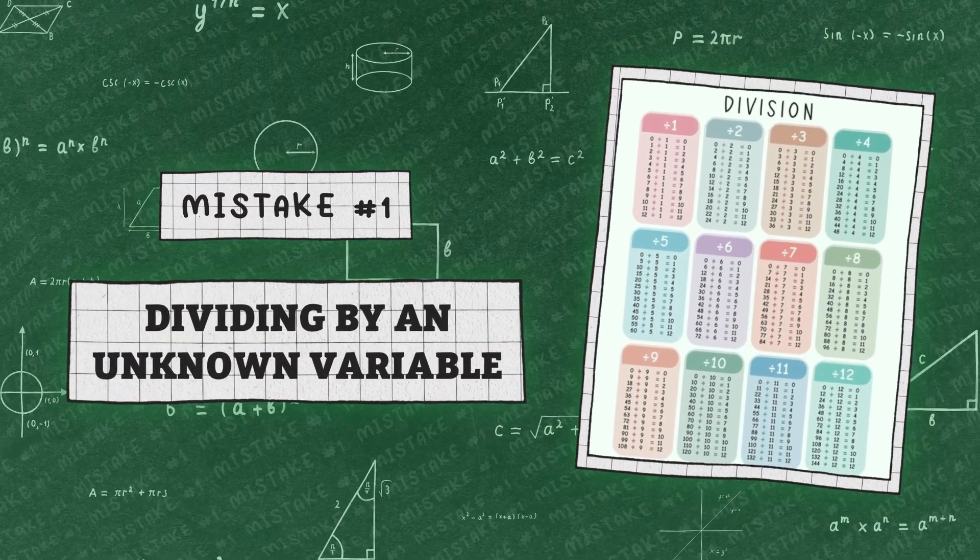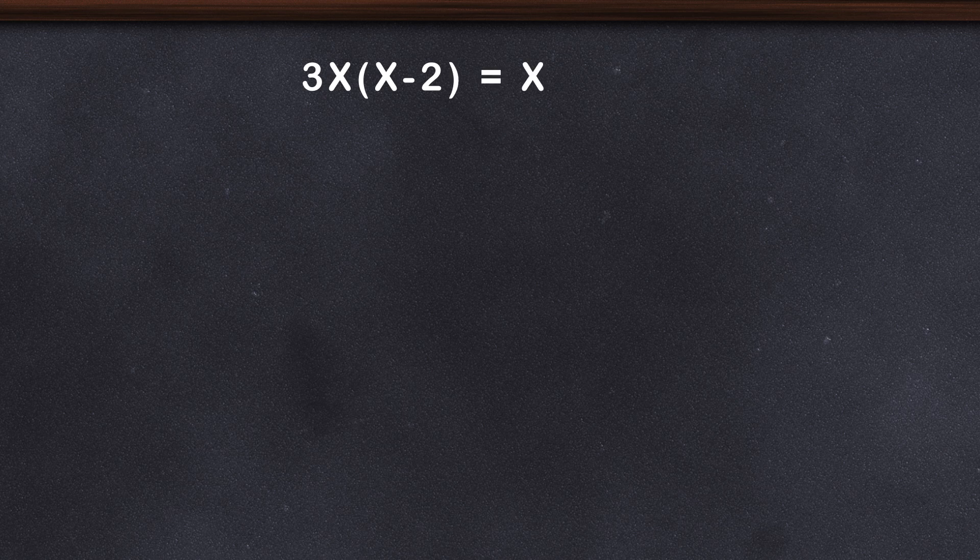Common mistakes in algebra and arithmetic. Mistake number one: dividing by an unknown variable. Consider an equation: 3x(x - 2) = x(x + 6).